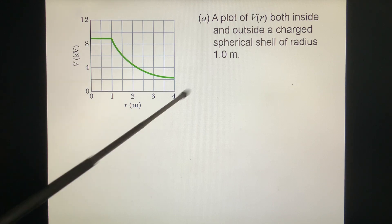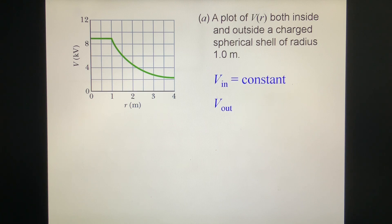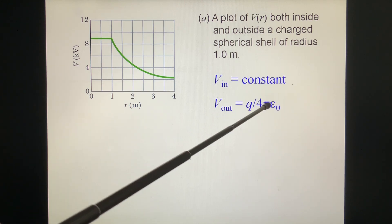And outside, we treat this as a sphere at point. The V goes like 1 over 4 pi epsilon zero, q over r. V outside equal to q over r.